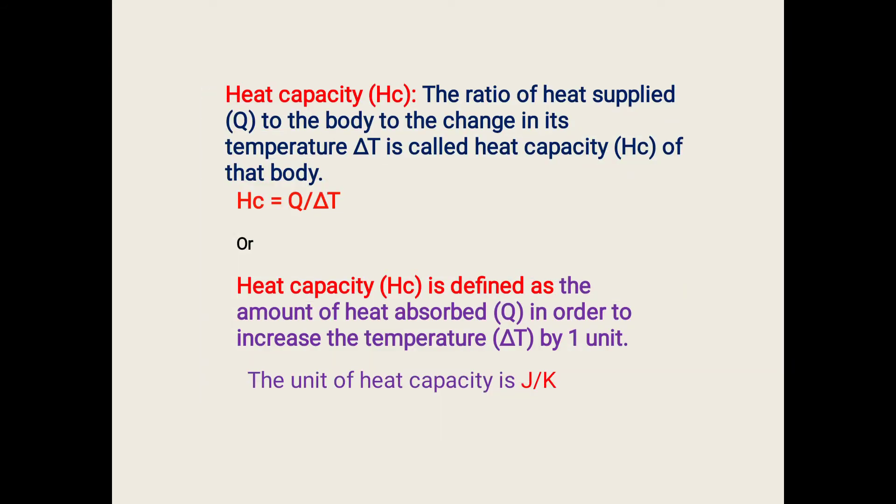Now we can define the heat capacity as the ratio of heat supplied Q to the body to the change in its temperature ΔT. Heat capacity HC = Q/ΔT. Or it is the amount of heat absorbed in order to increase the temperature by 1 unit. The unit of heat capacity is J/K.